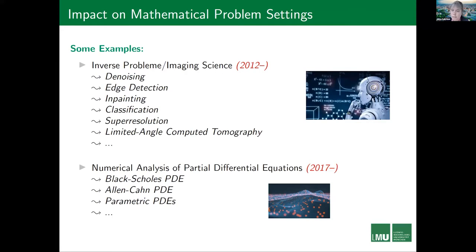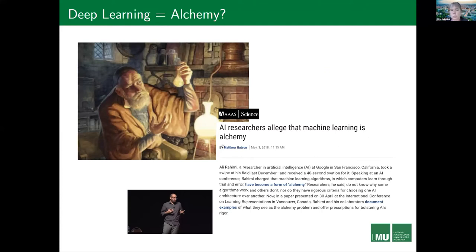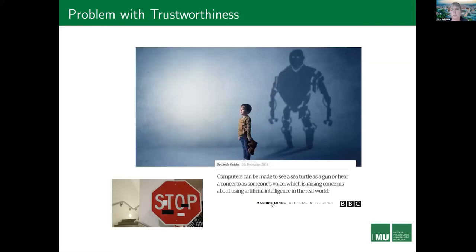Everything looks very bright. But on the other hand, basically two years ago, there was a big AI conference where Ali Rahimi gave a plenary talk, and he said machine learning and in particular deep learning right now is more or less alchemy. People don't know which neural network architecture to choose, which algorithm is the best — it's a lot of trial and error. This shows a need for a substantial theoretical foundation. In addition, these algorithms also often have problems with trustworthiness.